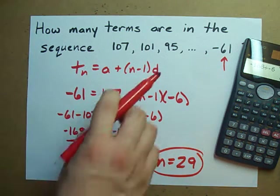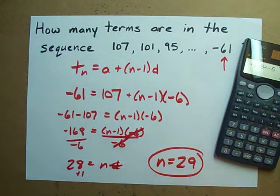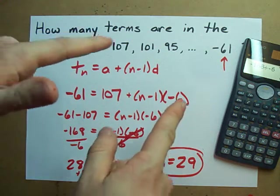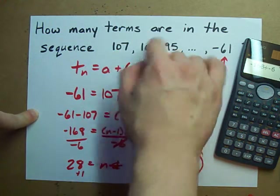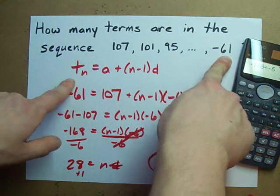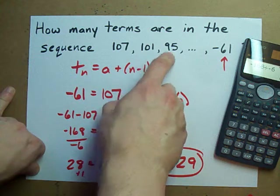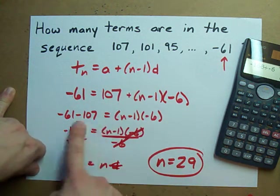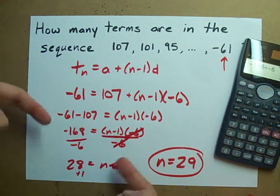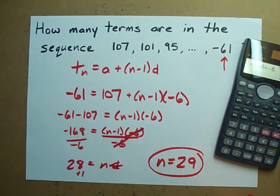That tells me that this is the 29th term. To recap, if you're looking for how many terms are in a sequence, plug in that for t, plug in the first term for a, plug in your common difference for d, and solve for your n algebraically. Finally, the method that I showed you here will always work. Best of luck.